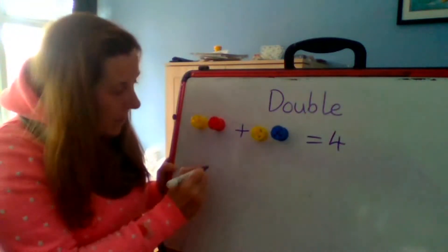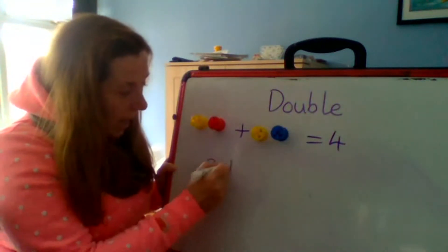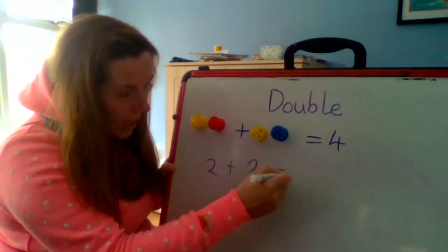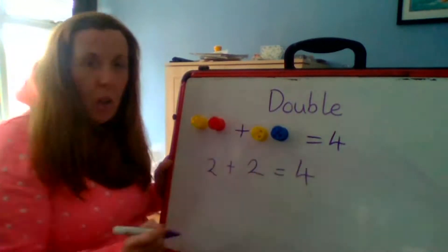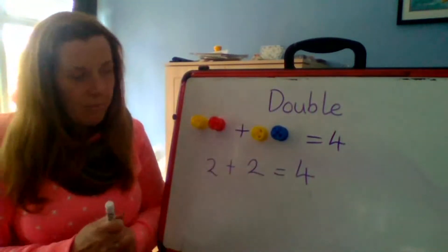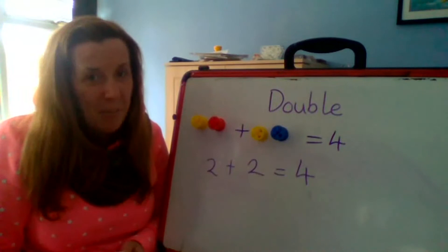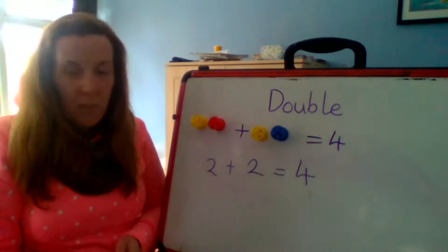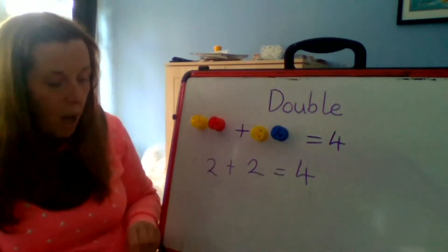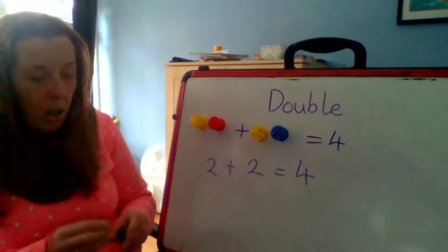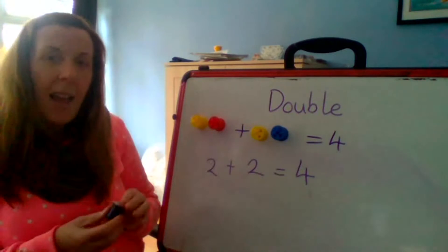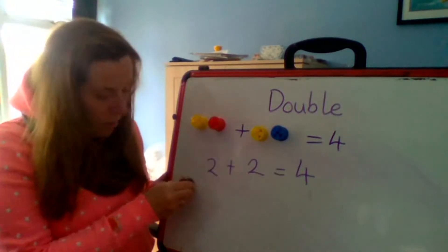And you could even write that as a number sentence look because it's two add two equals four. Does that make sense? Should we do it one more time? So I've got some more cotton reels here and this time I'm going to do four. And if I want to double four, so let me get my four on.